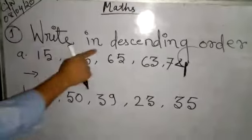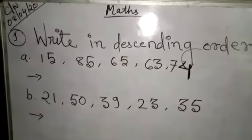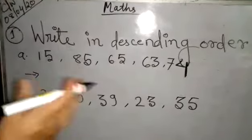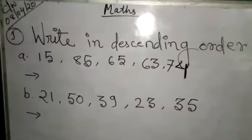So see, write in descending order. Descending means big to small. Very easy. Big to small. That means 9, 8, 7, 6, 5, 4, 3, 2, 1. Big to small.